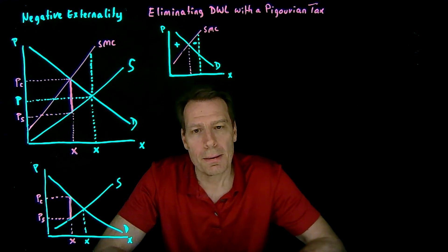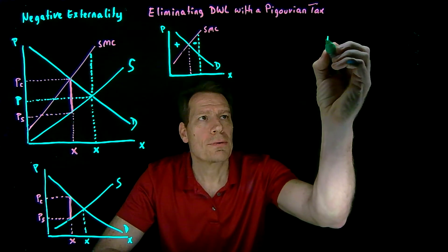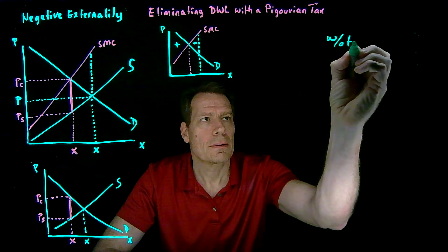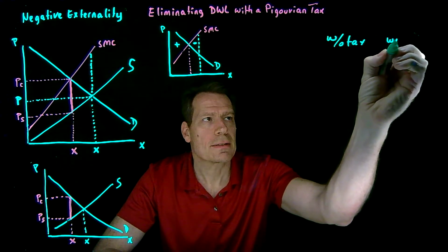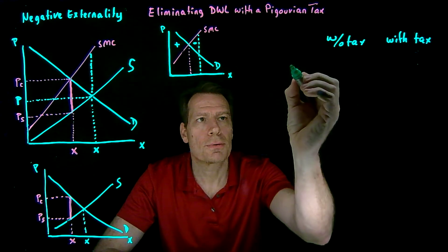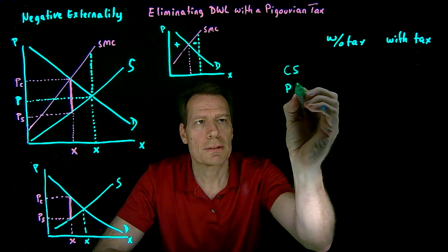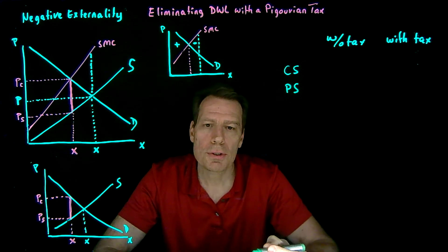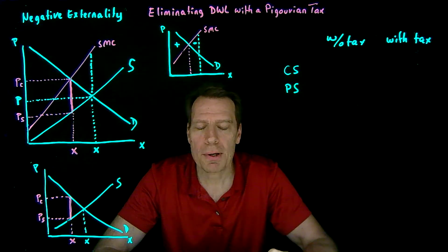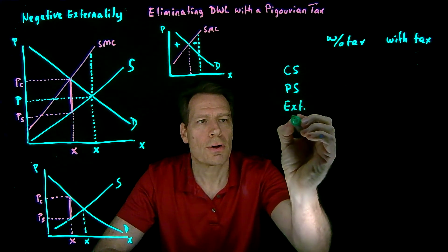We'll do that by calculating the total surplus without the tax and with the tax. So that total surplus includes consumer surplus and producer surplus, and it also includes the social damage from the externality. So we'll call it the externality cost.